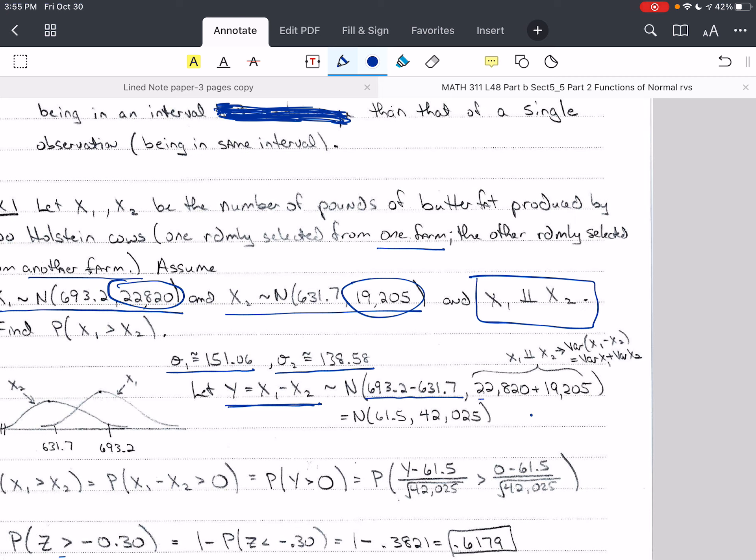But instead of subtracting, we add the variances, because they're independent. Variance of x₁ minus x₂ is the variance of x₁ plus the variance of x₂, and we've shown that a few times. And so by adding these together, we get this variance, and we get this mean.